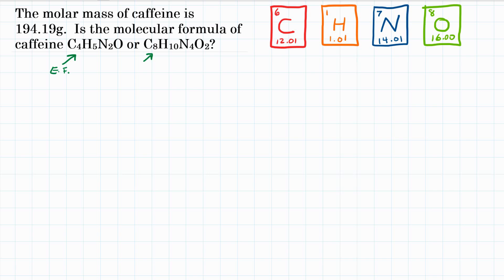To figure this out, since they gave us the empirical formula, we want to find the molar mass of our empirical formula. If we find the molar mass of that, we can compare it with the 194.19 grams of the actual formula, and comparing those will tell us which one is correct.